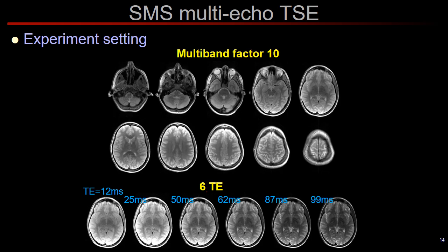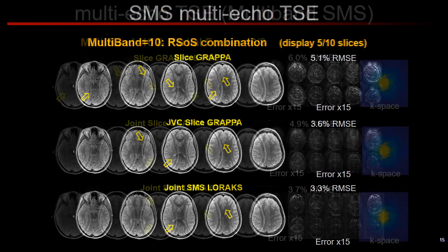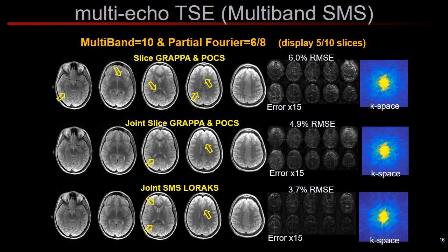We next consider SMS encoding for a multi-echo turbo spin echo acquisition, where we excite 10 slices simultaneously and investigate joint reconstruction across 6 different echoes. Displaying 5 out of 10 simultaneously excited slices: Slice GRAPPA worked well but suffered from some aliasing artifacts as indicated by the arrows. JVC Slice GRAPPA was able to suppress some of these and improve RMSE. Joint SMS-LORAX further mitigated these artifacts and reduced the error. Adding 6/8 partial Fourier brings the total acceleration to about 13-fold. In this case, a separate POCS reconstruction after Slice GRAPPA was required to recover the partial Fourier portion of k-space, whereas Joint SMS-LORAX flexibly combined partial Fourier sampling with SMS encoding and provided the best reconstruction quality.